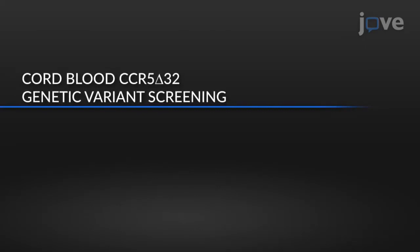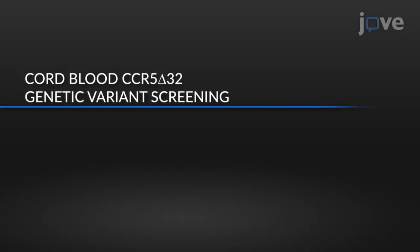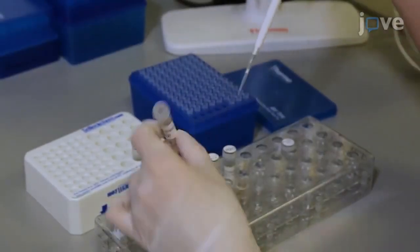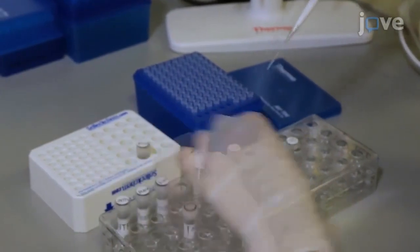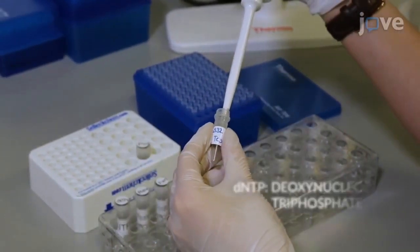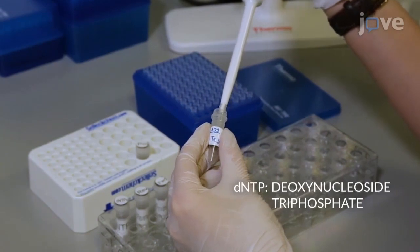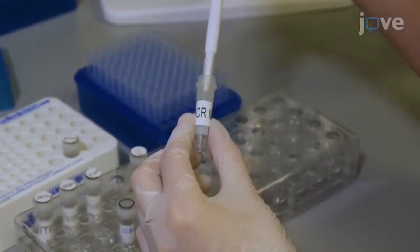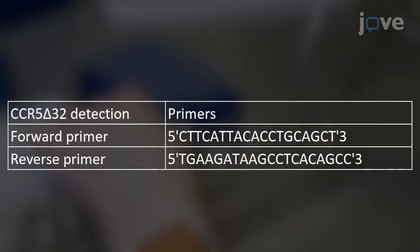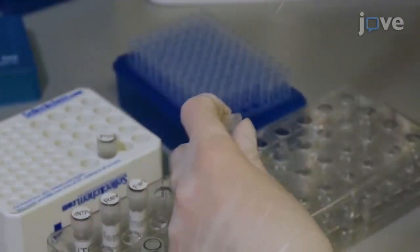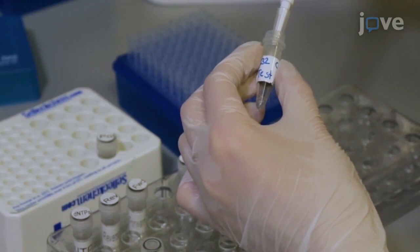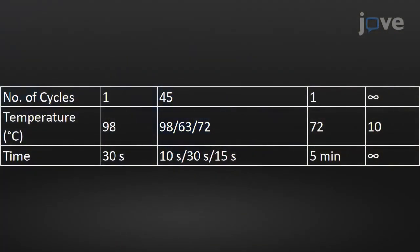For genetic screening of cord blood samples for CCR5 Delta 32 variants, incubate 1.25 microliters of non-pelleted flow-through with 11.25 microliters of PCR mix containing 200 micromolar dNTP mix, 0.01 units per microliter of high fidelity DNA polymerase, and forward and reverse primers as detailed in the table. Adjust the volume with nuclease-free water to approximately 12.5 microliters for each PCR reaction, and amplify the genomic fragments with the PCR cycling program as indicated in the table.